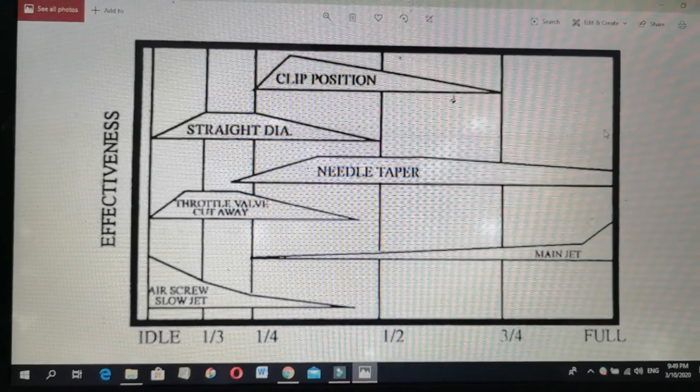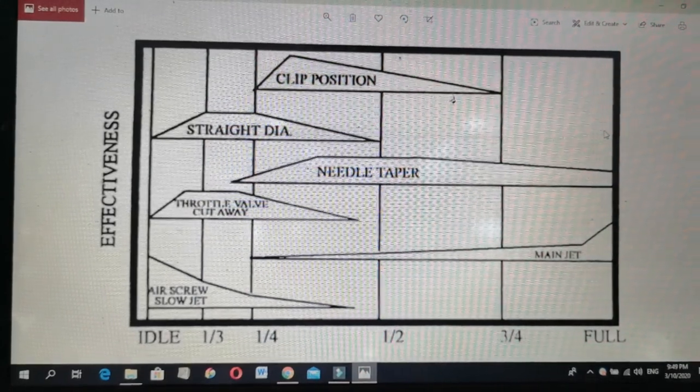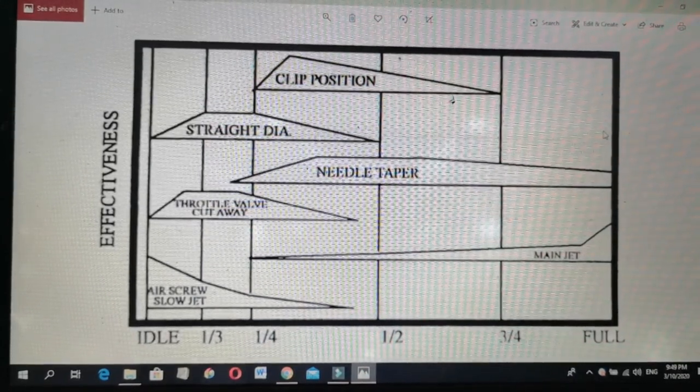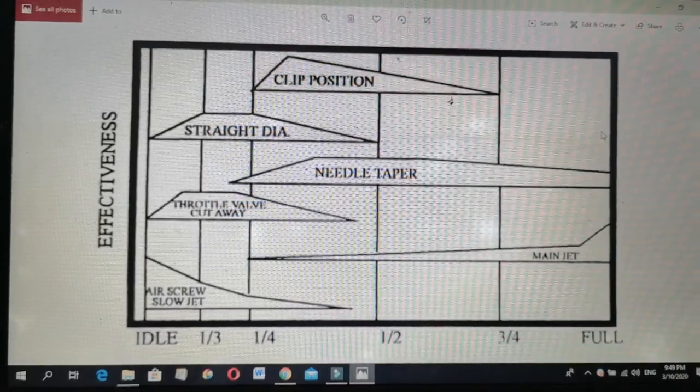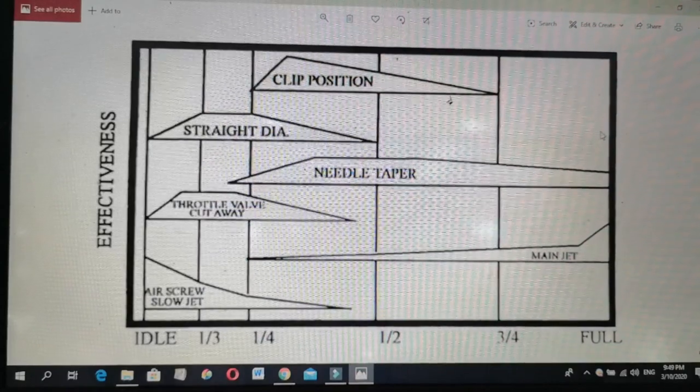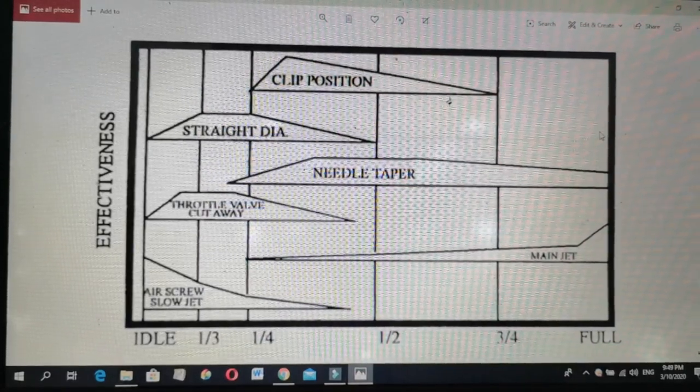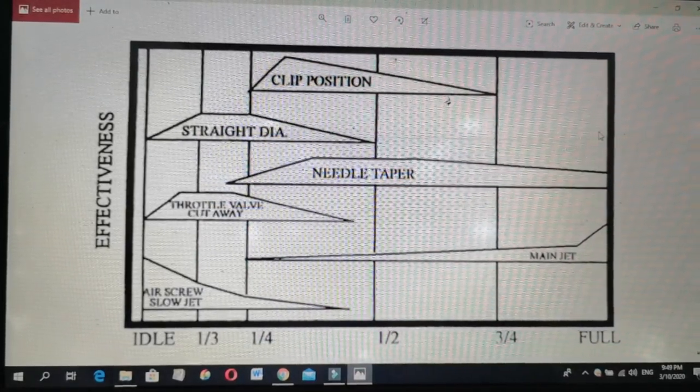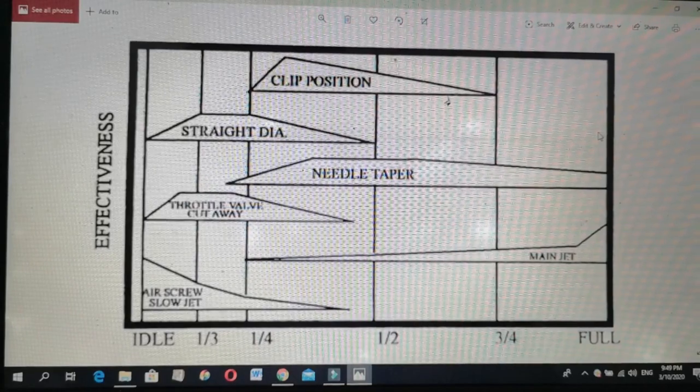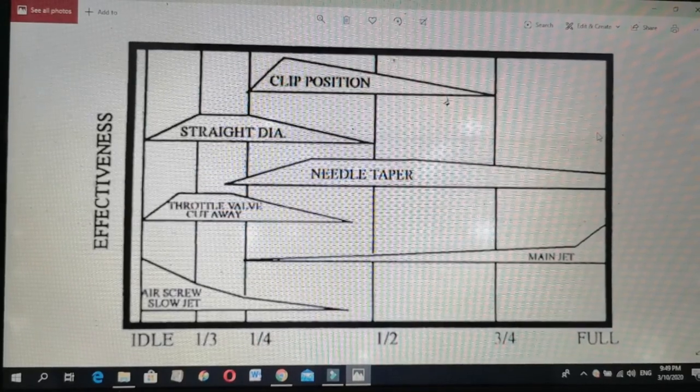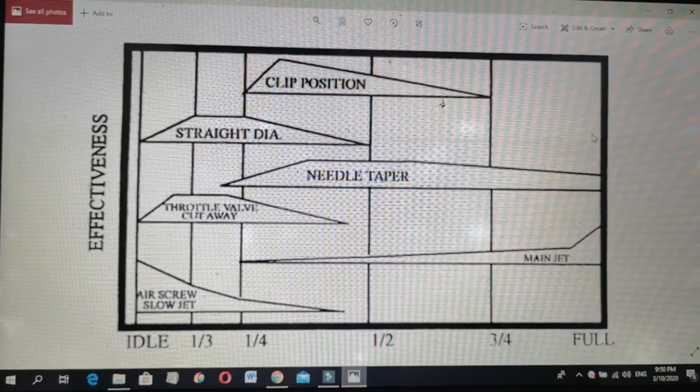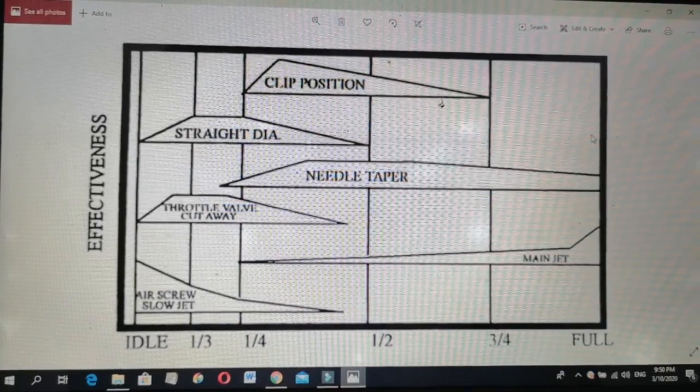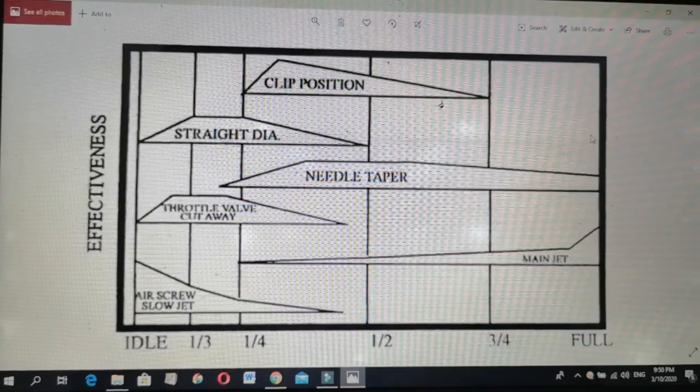May tatlong adjustable circuit ang ating carburador. Ito ay ang pilot jet or slow jet, jet needle, at main jet. Ang mga circuit na ito ay may mga overlapping. Ibig sabihin, kapag may in-adjust na isang circuit, may maapektuhang ibang mga circuit. Kaya, medyo komplikado ang pagtutunan ng carburador kapag may load na ang makina o nagpalit na ng ibang carb.